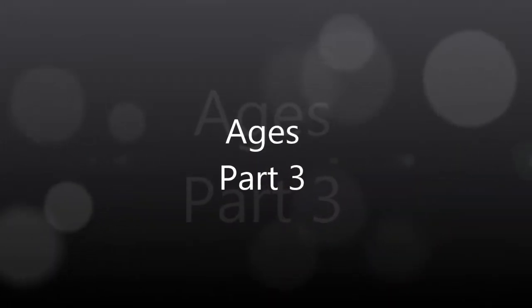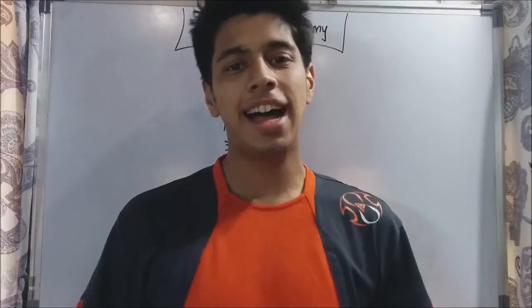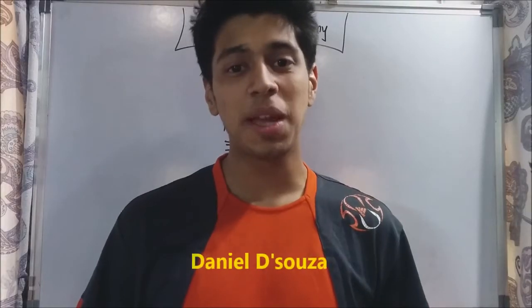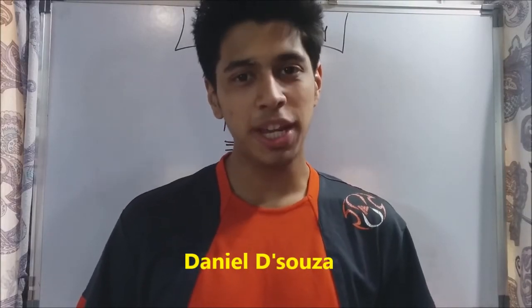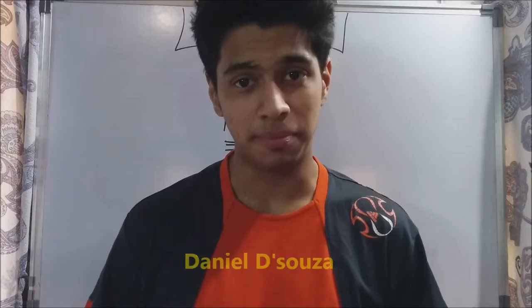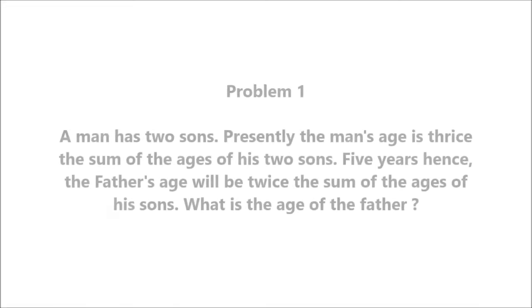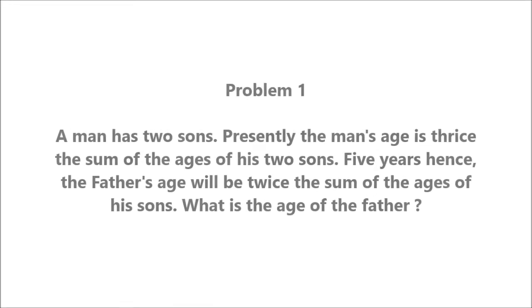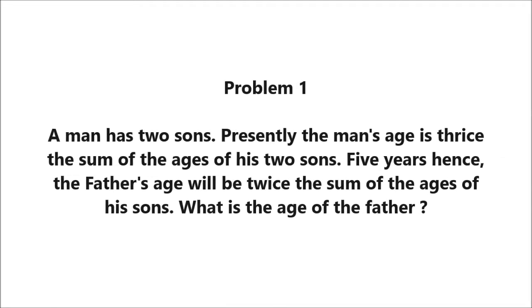Hi, I'm Daniel Souza and welcome to APTUDE Academy. This is Part 3 of the lecture on ages. Here's your first problem: a man has two sons. Presently, the man's age is thrice the sum of the ages of his two sons.